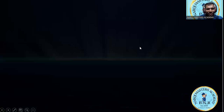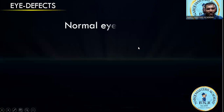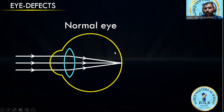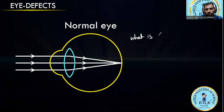Welcome to lecture number two. Today we'll discuss eye defects. This is the normal structure of the human eye, and we'll see where the image forms on the retina. As discussed in the previous class, we covered the functions of each part. Today we discuss eye defects — there are basically three types, and we'll focus on myopia: what it is, how to correct it, and what causes it.